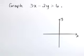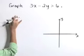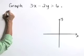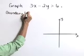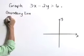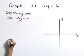Graph the inequality 3x minus 2y is greater than 6. We're going to start by graphing our boundary line, 3x minus 2y equals 6.